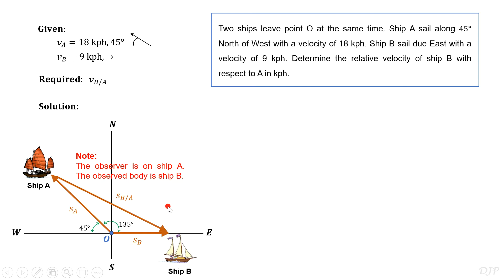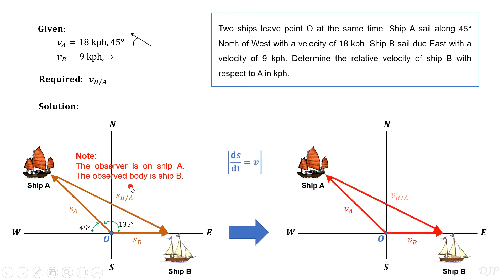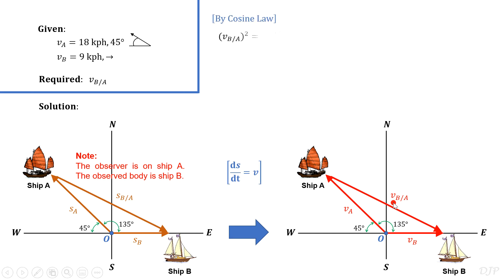For such problems, our solution will be based on the geometry formed by drawing the vectors. Since what we are required is to solve for relative velocity, we will just differentiate these displacements with respect to time to create our new drawing. Since V sub A and V sub B are given, we can solve for the required relative velocity by applying trigonometry. To get the magnitude of V sub B over A, let us apply cosine law.